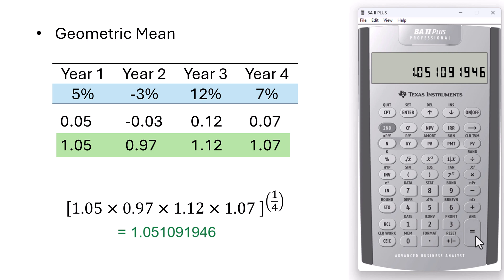To determine the geometric mean return, we subtract 1 from the result to obtain 0.05109. And we can convert that to percent by multiplying it by 100. Therefore, the geometric mean of these returns is 5.11%.